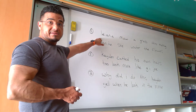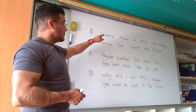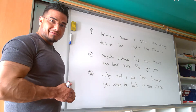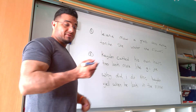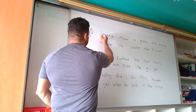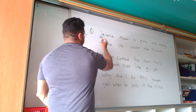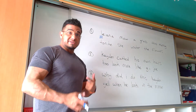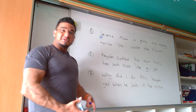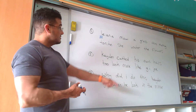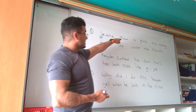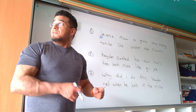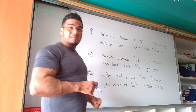Beginning of sentence number one is a proper noun, and also the beginning of a sentence, which always requires a capital letter. Leona mow a grass this morning — so she's done it this morning, which means it's happened in the past, which suggests that this verb should be past tense. So she mowed.